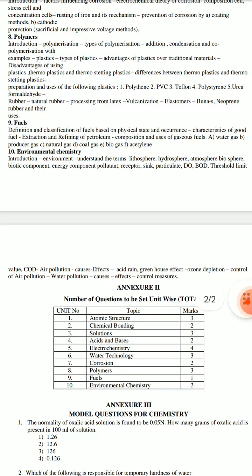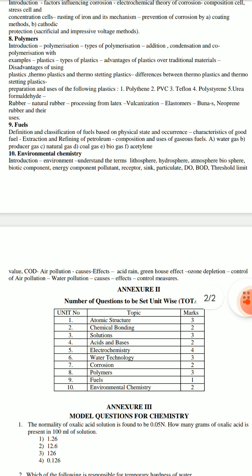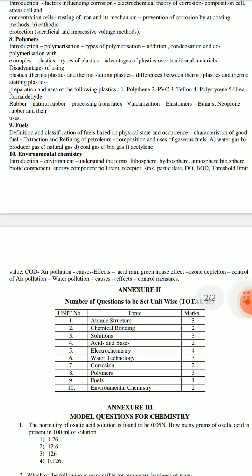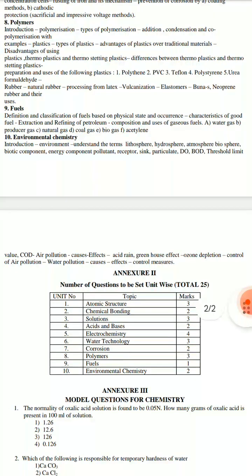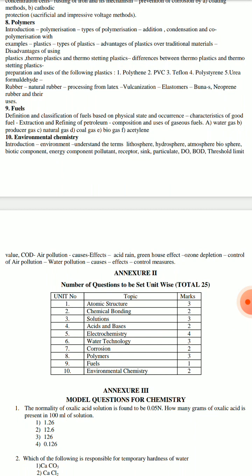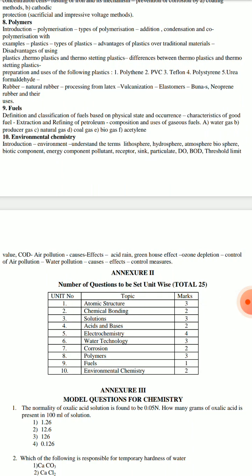Fuel. Fuel is classified based on physical state and accuracy. The theory covers characteristics of fuel and its composition. There are gaseous fuels such as water gas and producer gas, related to their composition, hydrogen content, and oxygen content.